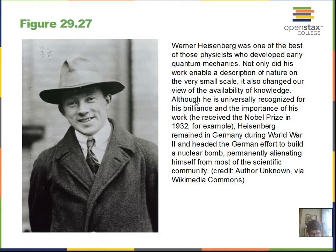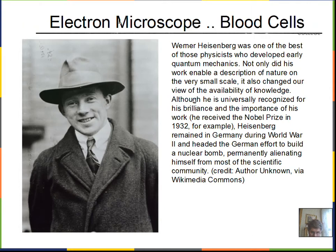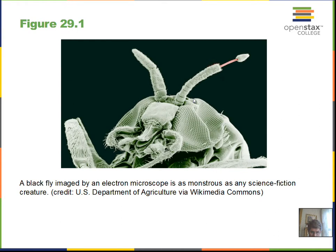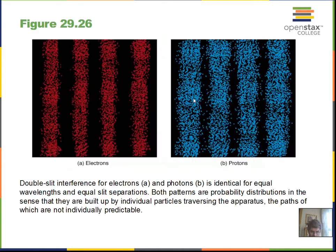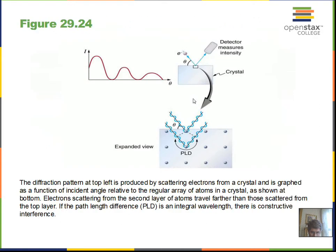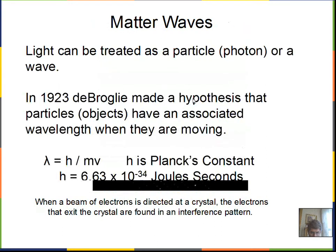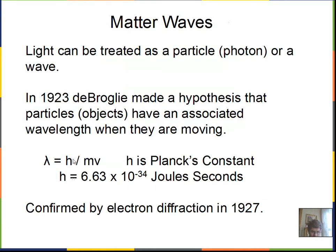So then probability with the Heisenberg uncertainty principle. Maybe just to go back to the wave nature of the electron for just a minute here. We'll get back to our equation.